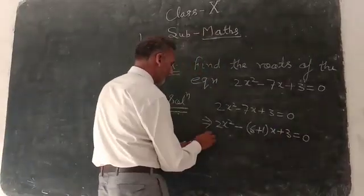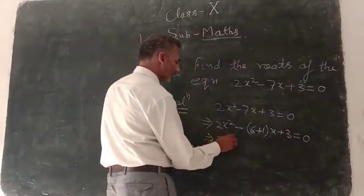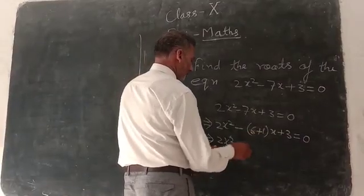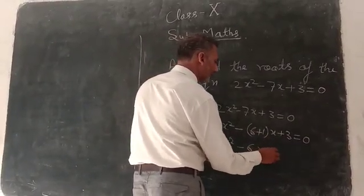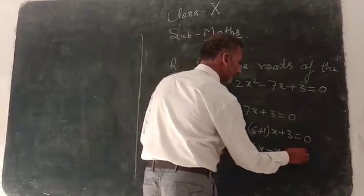Equal 0, you may write 2x squared, and yes please remove the bracket, 6x minus x plus 3, equal 0.